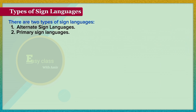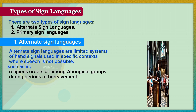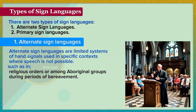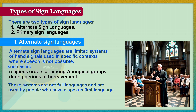There are two types of sign languages: alternate sign language and primary sign language. Alternate sign languages are limited systems of hand signals used in specific contexts where speech is not possible, such as in religious orders or among Aboriginal groups during periods of bereavement. These systems are not full languages and are used by people who have a spoken first language.